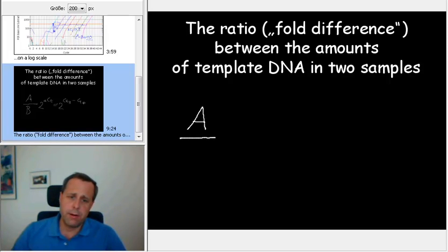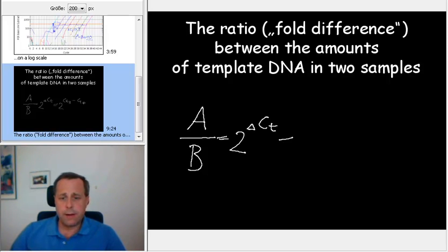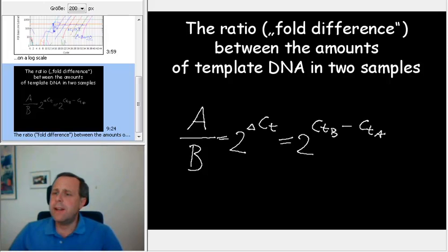So just as a take home message. Let's just recapitulate that again. So the fold difference or better the ratio between sample A and B is nothing else but 2 to the power of delta CT. And that corresponds to the CT value obtained with sample B minus the CT value with sample A. If you got that you really understood the principle of quantitative PCR and all we need to add now are a few more features that are now quite easy to understand. And this will then allow you to apply it to pretty much any determination of DNA amounts that you would like to use. Thank you very much. See you later.